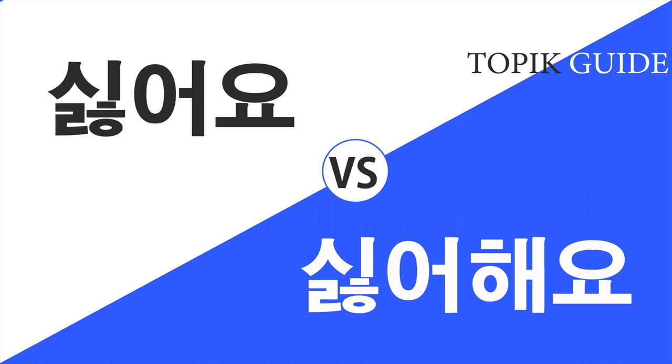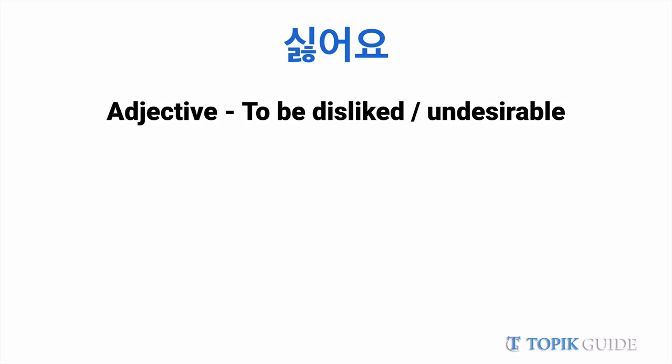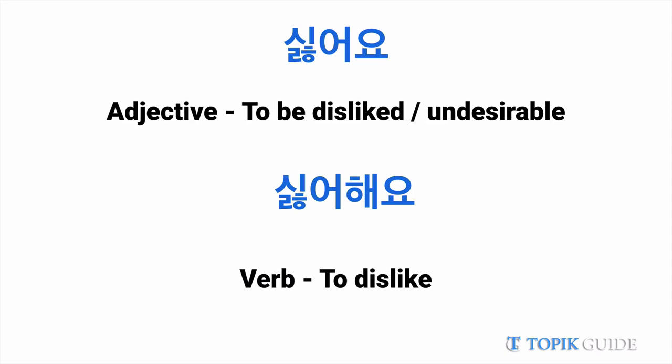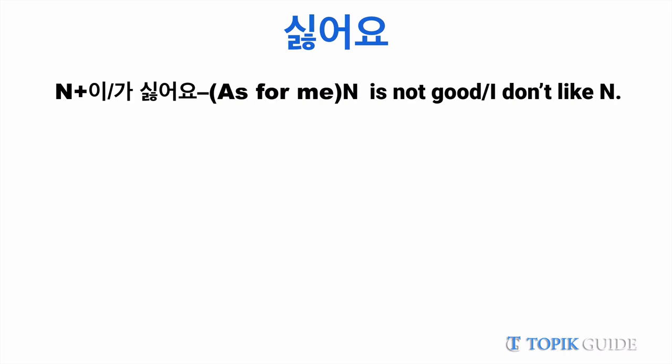But they're used a little differently as far as grammar is concerned. Shiroyo is an adjective which means 'to be disliked' or 'to be undesirable', while shirohaeo is a verb which means 'to dislike something'. So when you use shiroyo, the pattern would be noun plus ii or ga — the subject particle — and then shiroyo.